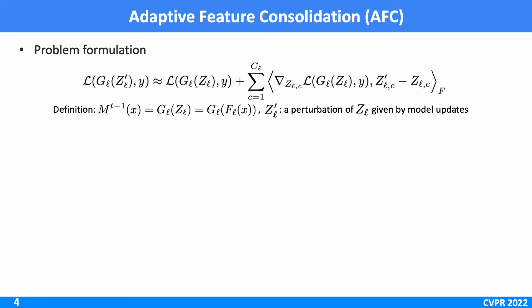Z'L is a perturbation of the intermediate feature map ZL caused by model updates. To mitigate the catastrophic forgetting issue, we aim to minimize the loss change over the previous tasks given by model updates as follows.